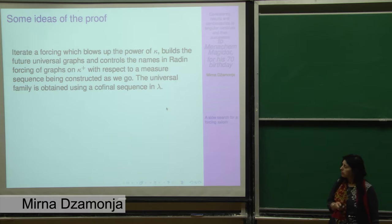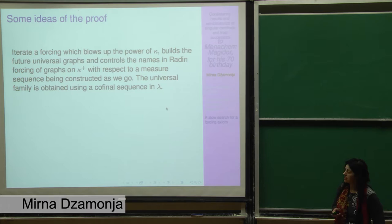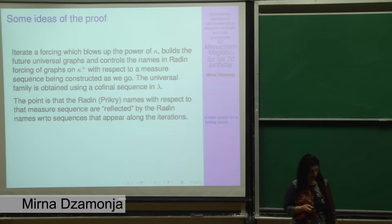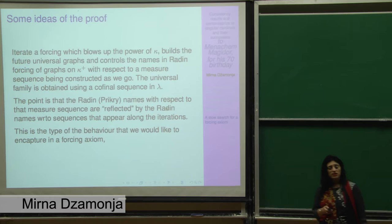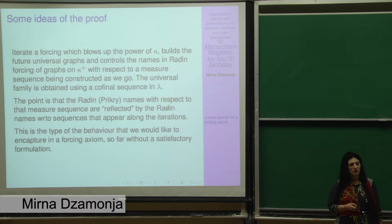Anything that looks like a measure on kappa or sequence of measures, it's not going to look like that anymore once you have finished. So what's important in this argument is that we are actually building the measure sequence as we go. So we are guessing this measure sequence. And the point of it is that we build it in a way that there is a reflection of that measure sequence that we have along the iteration. Then the universal family, we do this iteration for lambda many steps. So lambda is the value of the 2 to the kappa at the end. But we get this universal family as a co-final sequence of certain graphs, co-final in lambda. And so as I said, the main point is that the Radin names, or prickly names, with respect to the measure sequence that we build, are reflected by the names of the Radin forcings that appear during the iteration. So we can control them somehow. This reflecting type of behavior is what we would like to encapture in the forcing axiom. So far without a satisfactory formulation. There have been many candidates, epic fails, as Matt would call them.